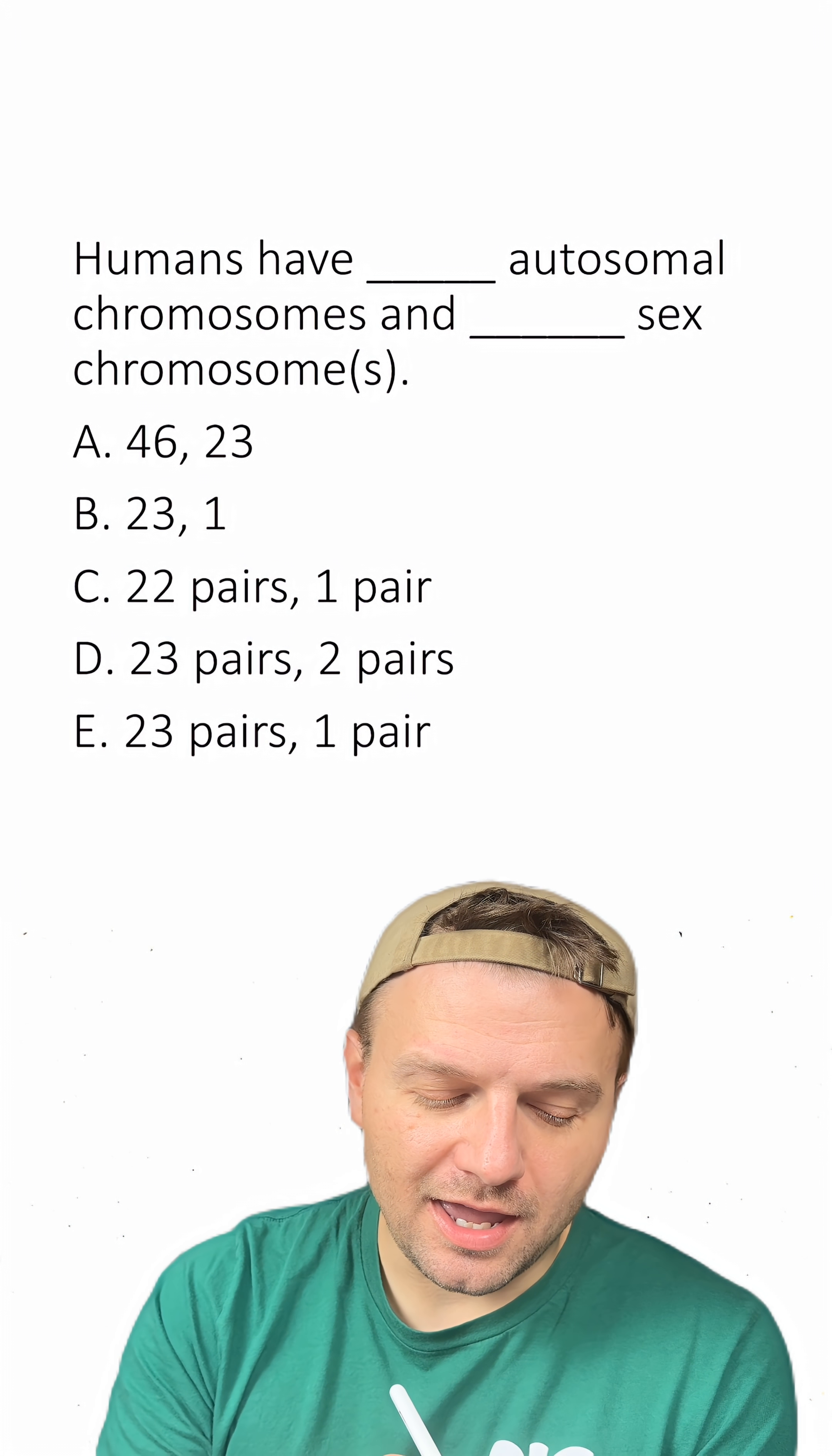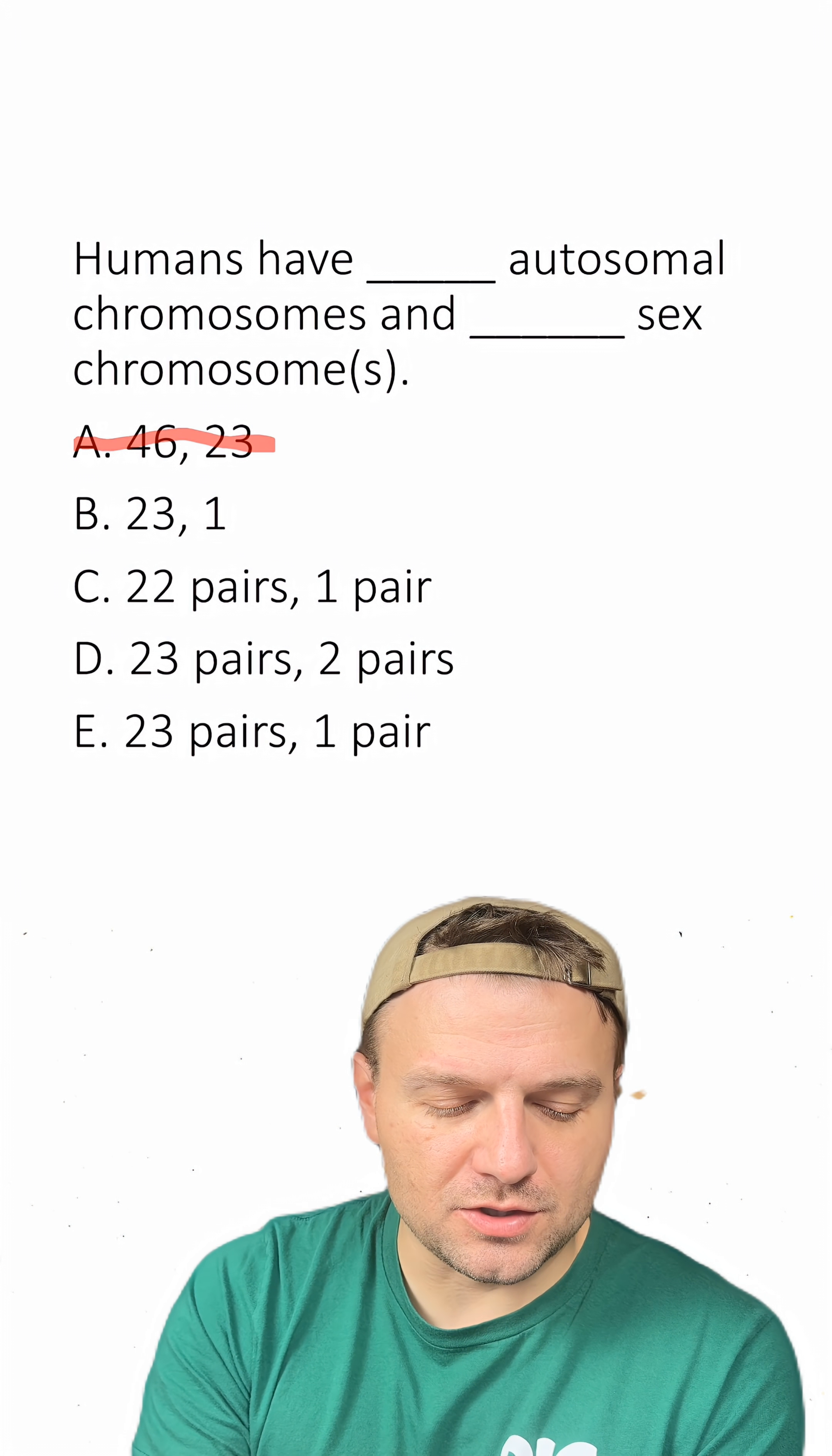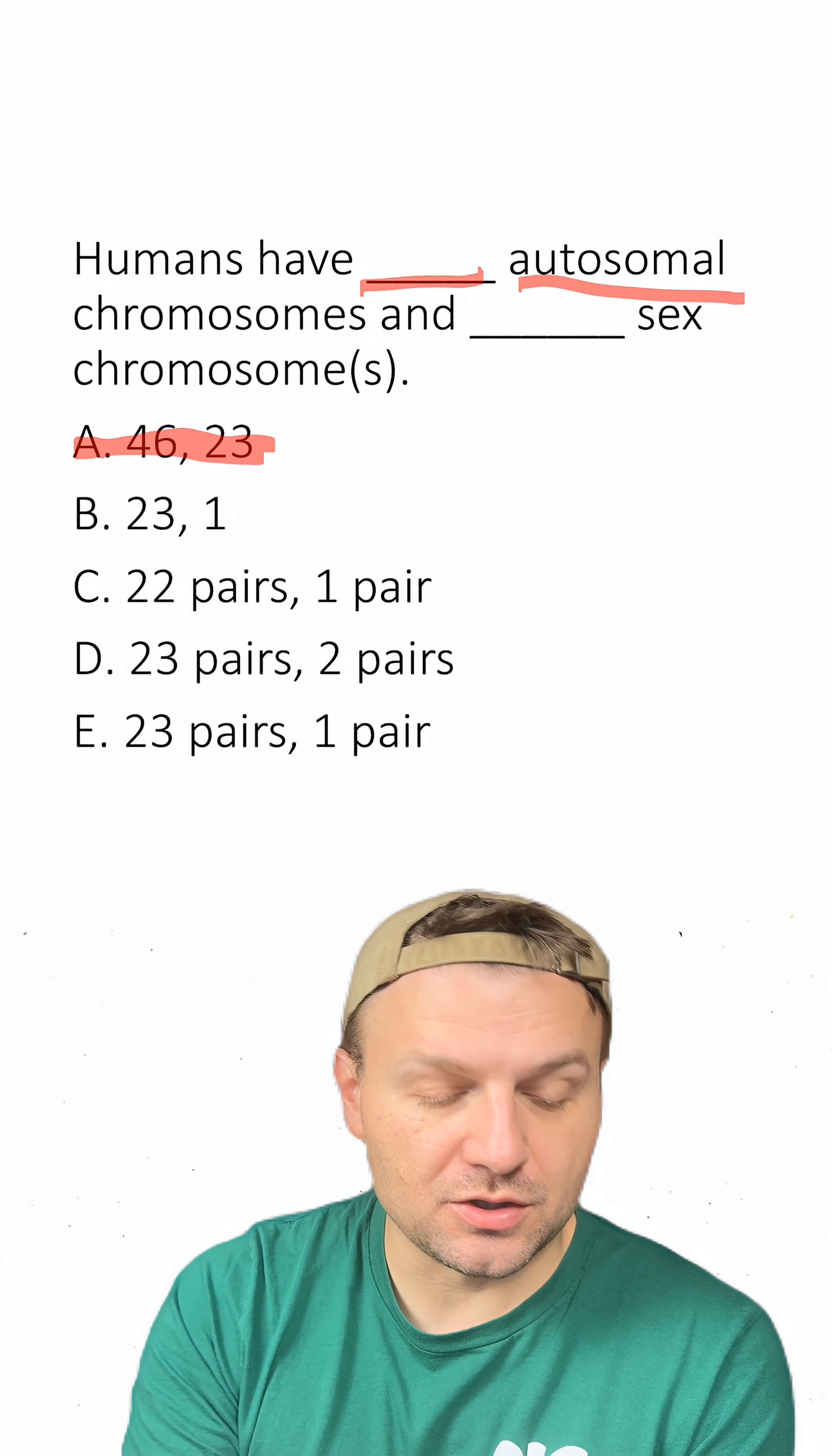Let's go through the answers now and start marking off the ones that are wrong. Humans have 46 total chromosomes, but that means they can't have 46 chromosomes of just the autosomal, so A is wrong.